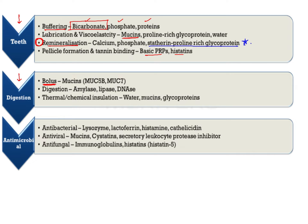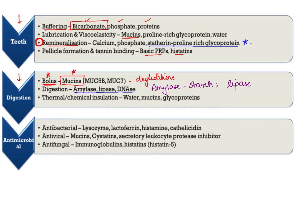Regarding digestion, saliva helps in forming the bolus, thus aiding in deglutition — the swallowing of food. Bolus formation is due to the presence of mucins. Digestion is aided by important enzymes like amylase, which acts on starch, lipase, which acts on lipids, and maltase — these are some of the important digestive enzymes present in saliva.